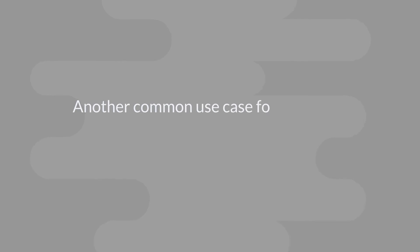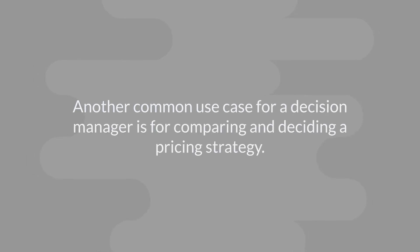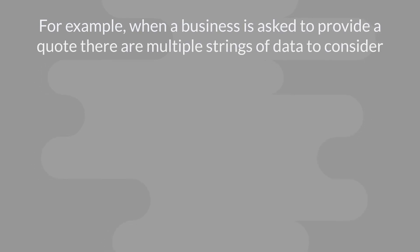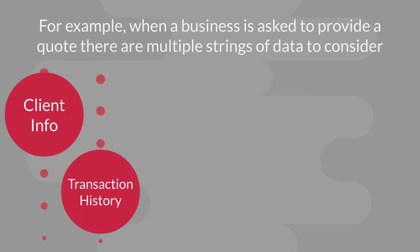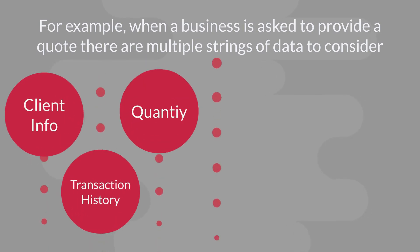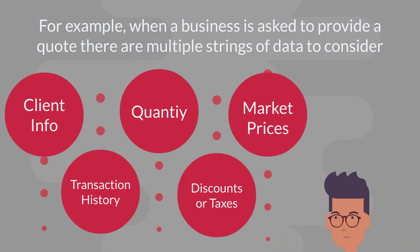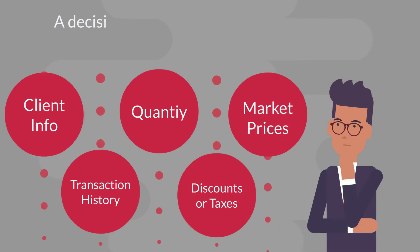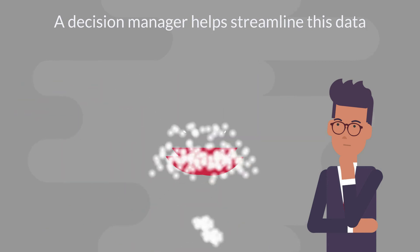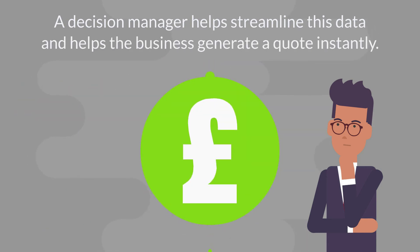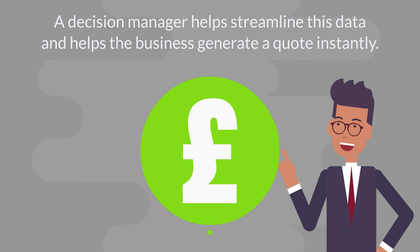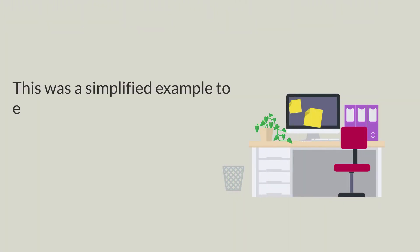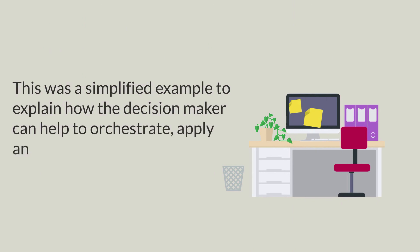Let's look at another common use case for Decision Manager — comparing and deciding a pricing strategy. When drawing up a quote, there are multiple streams of data and rules to consider. These include the client's data and their past transactional history, the quantity they want, any discounts this might incur, and current market prices and trends. Decision Manager can help employees streamline this data and generate a price quickly and efficiently. This is just one example of how businesses can use Decision Manager to orchestrate, apply, and govern business rules.